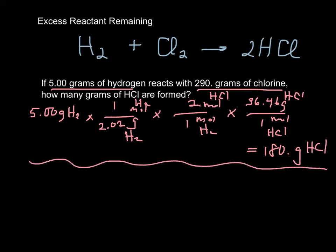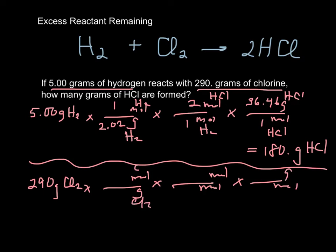Let's figure out what the other one is. So 290 grams of chlorine. Again, we're going to go grams to moles, moles to moles, moles to grams. So chlorine, our mole ratio of chlorine to HCl.